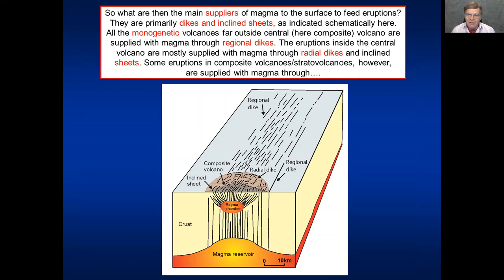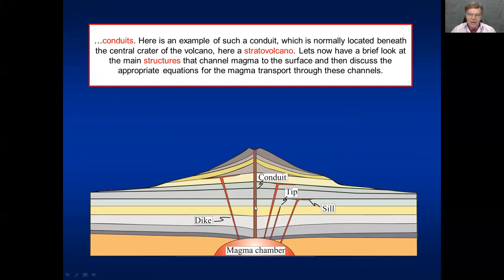So what are the main suppliers of magma to the surface to feed eruptions? Well, primarily they are dikes and inclined sheets as we discussed often in this course before. We could say that all the monogenetic volcanoes, all the volcanoes located outside the central volcano, here a composite volcano, would be supplied with magma through regional dikes like this one here. Inside the central volcano, inside the composite volcano, the eruptions are partly supplied with magma through radial dikes or through inclined sheets. But some eruptions in composite volcanoes, stratovolcanoes, are supplied with magma through conduits, as I indicate in a very schematic way here.